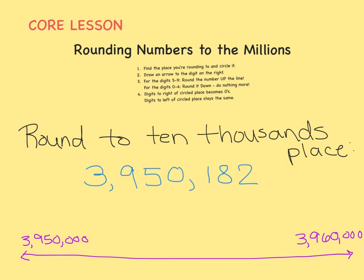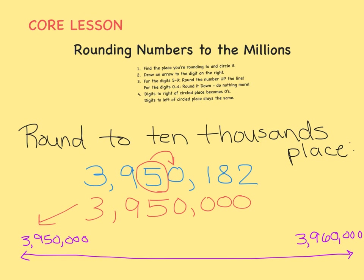Let's find out. First, find the place you're rounding to and circle it — this time it's the ten-thousands place. Look to the right for what to do. We see a zero. So for the digits 0 through 4, round it down, do nothing more. When we round down, the circled digit stays the same, so the 5 will stay a 5. Everything to the right will become a zero. Everything to the left will stay the same. This number rounds down to 3,950,000.